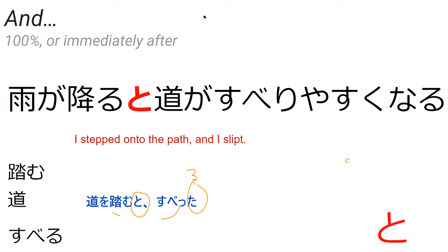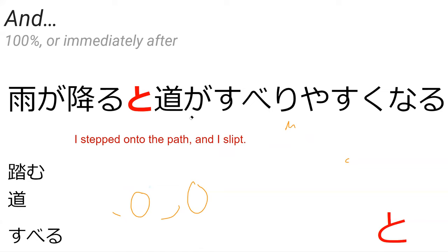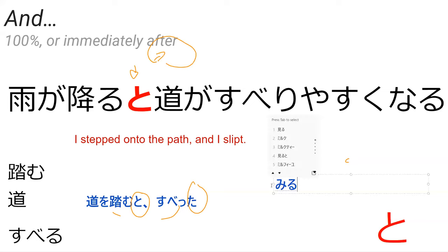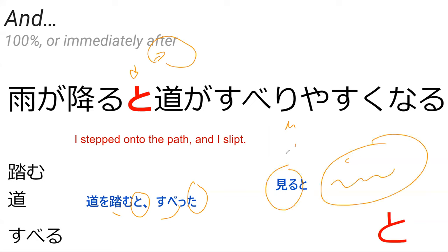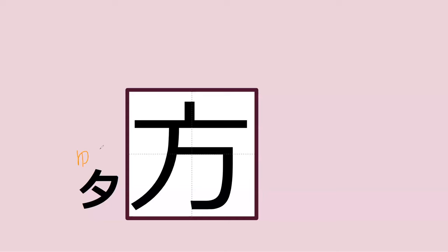Suberu does mean to slip but it also means to slide - both meanings: slip and slide. So theoretically this could be 'right after I step on the path, I slide or slip' - both of those work. This can also be used for realizing information, like you do this and immediately afterwards a piece of information shows up in your brain. You'll see this a lot with miru in Japanese, where it basically means 'I look at something and the next thing will describe what you saw.'